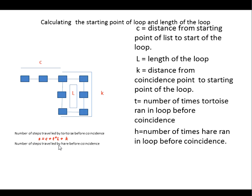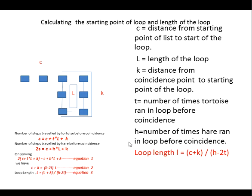Similarly, the number of steps travelled by the hare before coincidence will be 2s, as for each step taken by the tortoise, the hare takes 2 steps, and the equation will be similar to the previous one. On solving, we get: loop length l = (c + k) / (h − 2t). It is impossible to evaluate this expression unless we have the starting point of the loop, as it is impossible to calculate c, t, and h values without knowing it.